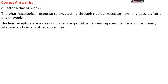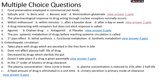The pharmacological response of drugs acting through nuclear receptors normally shows response after a day or week. Nuclear receptors are a class responsible for sensing steroid and thyroid hormones, vitamins, and certain other molecules. Question number three: a drug interacting with a receptor but does not elicit a response is called — option A: agonist, option B: orphan drug, option C: antagonist, or option D: placebo.